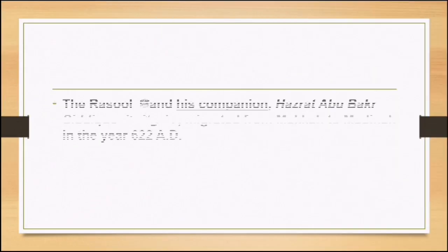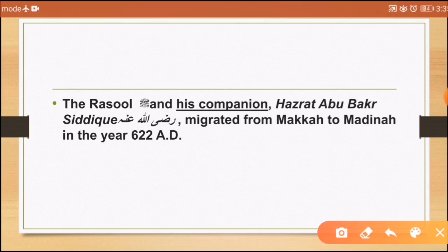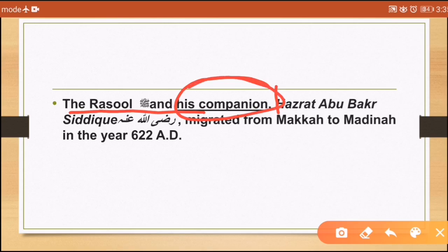Another cataphoric reference example: 'The Rasul and his companion Hazrat Abu Bakr Siddiq migrated from Makkah to Medina in the year 622 AD.' If you read the sentence, you don't know who the companion of Rasul is, so you go forward in the text and find that his companion was Hazrat Abu Bakr Siddiq (Razi Allah Ta'ala Anhu).